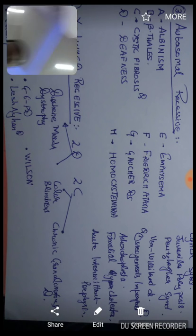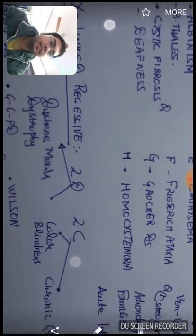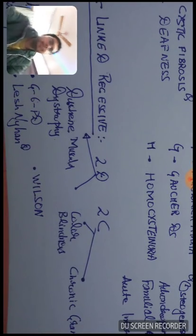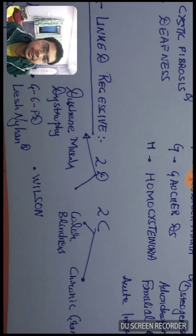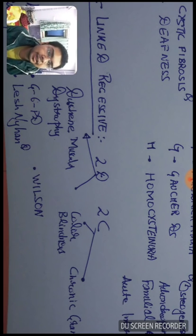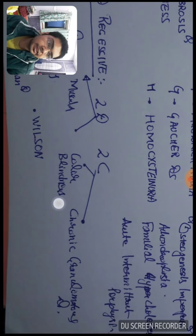Now coming to X-linked recessive, you need to remember 2Ds and 2Cs for this: Duchenne muscular dystrophy, color blindness, and chronic granulomatous disease.